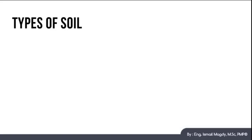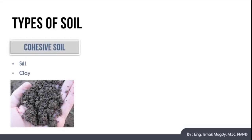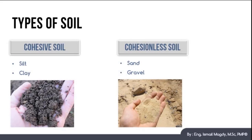Soil could be classified into two main types. First type is cohesive soil, such as silt and clay. And second type is cohesionless soil, such as sand and gravel.